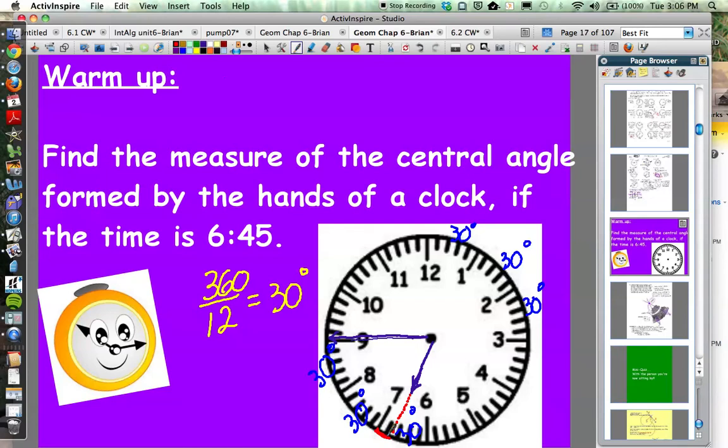If you think about 6:45, how much of the hour has gone by at 6:45? Well, 45 minutes out of 60 minutes would be three-fourths of the hour. So three-fourths of an hour has gone by, which means that this hour hand right here has gone three-fourths of the way between the 6 and the 7. Three-fourths of the way.